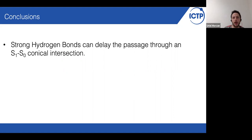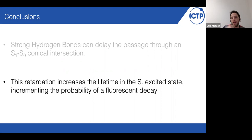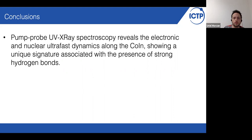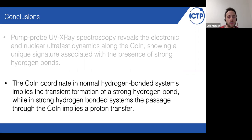To conclude: we showed that strong hydrogen bonds can delay the passage to a conical intersection, and as a consequence there is a retardation that increases the lifetime in the first excited state, incrementing the probability of fluorescence. We have shown that pump-probe UV X-ray spectroscopy can reveal both the electronic and nuclear dynamics around conical intersections, showing a unique signature associated with the presence of strong hydrogen bonds. Finally, the conical intersection coordinate in normal hydrogen-bonded systems implies a transient formation of a strong hydrogen bond, while in the case of strongly hydrogen-bonded systems, it implies a proton transfer.